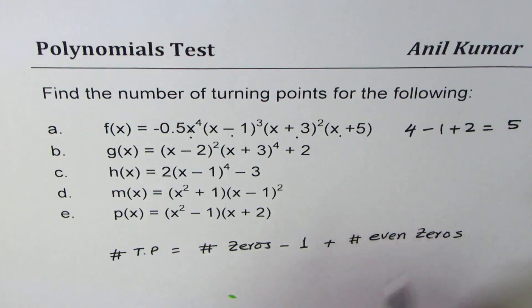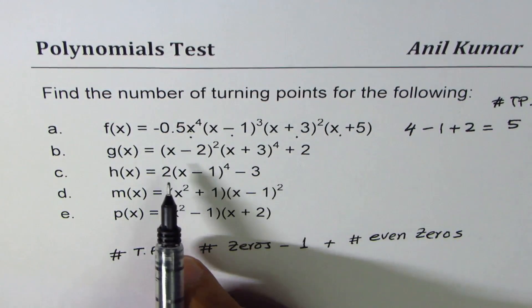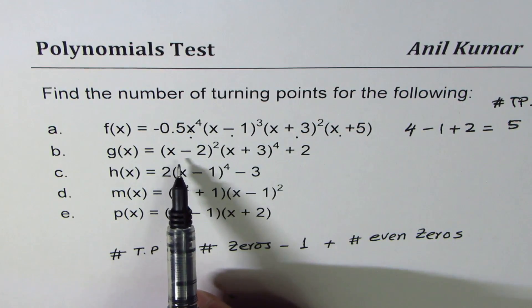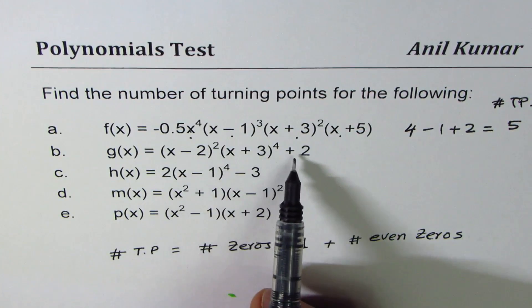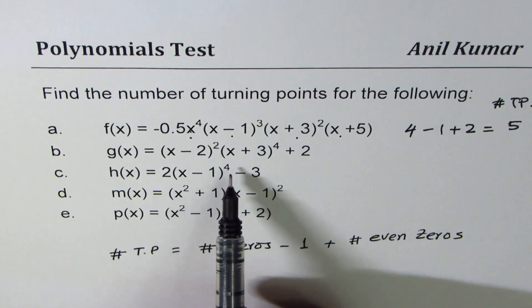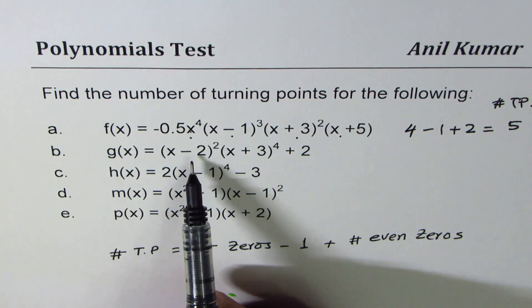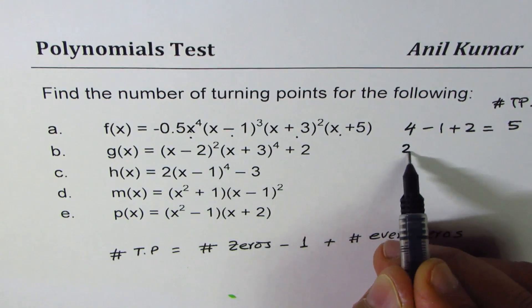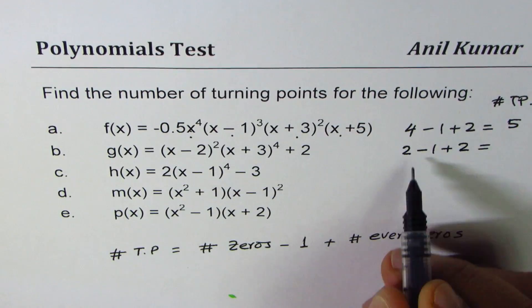The next one here is kind of tricky. What we have here is two zeros, but we are taking the function above. It doesn't really change the number of turning points, so we can still count them like zeros. We have two zeros, both of them are even, so the formula will be 2 minus 1 plus 2 even zeros, and that gives us 3.